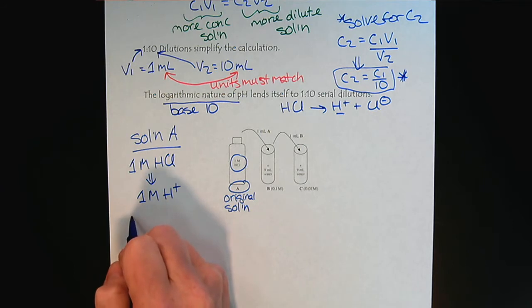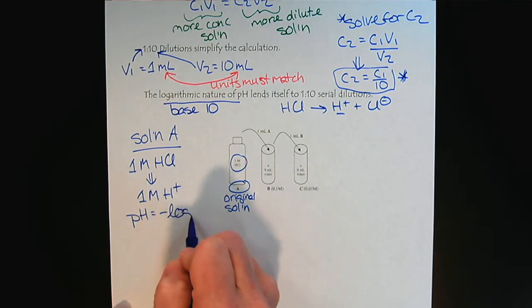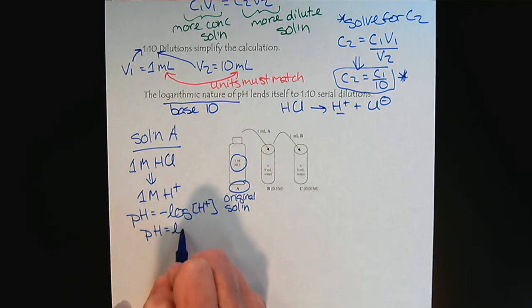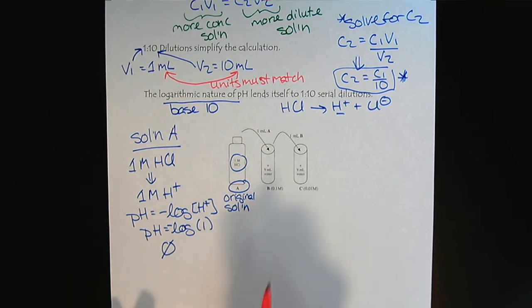So now we can calculate the pH, which is the negative log of the hydrogen ion concentration. So the pH is the negative log of 1, which is 0. So this first solution, pH equals 0.